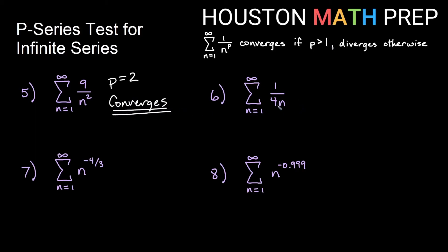1 over 4n. You could think of this as 1 fourth times the sum of 1 over n. This is the harmonic series, but it's also a p-series where p equals 1. So be careful here. If p equals 1, does it converge? No, p must be greater than 1 to converge. So this diverges. We know the harmonic series diverges. 1 fourth times something infinitely large is still infinitely large.